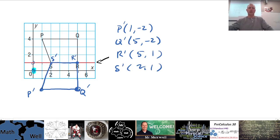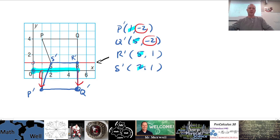Always start at (0, 0): the x-coordinate is left-right, so going right gives positive values, which is why all these x-coordinates are positive. For P and Q we go down for the y-coordinate, which is why those y-coordinates are negative. For R and S we go up from the line, so those y-coordinates are positive.